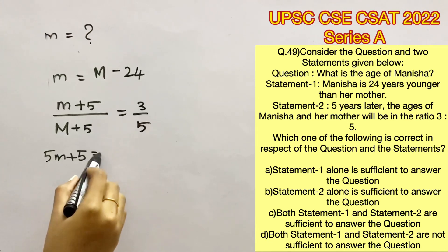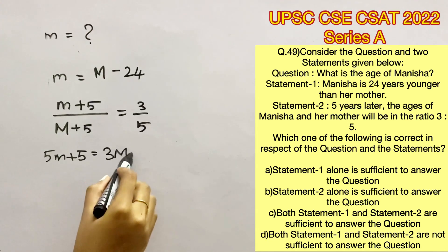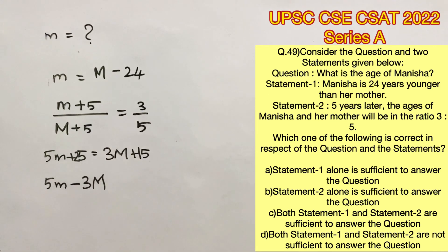So now we can cross multiply and we'll get 5 small m plus 25 equals 3m plus 15 which will give us an equation 5m minus 3 capital M is equal to minus 10.